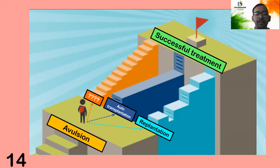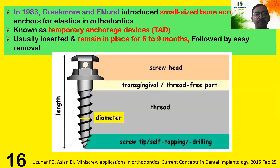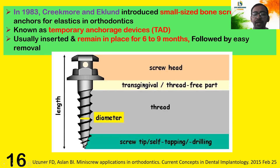In addition to replantation and auto-transplantation, there is one more novel approach: mini implants. The mini implant is screw-like in shape, with a diameter of around 1.2 to 2.3mm and a length of 8 to 13mm, indicated as an intermediate or temporary prosthesis. In 1983, Crickmore and Accluent introduced a small-size bone screw used as an anchor for elastics in orthodontics, known as a temporary anchorage device, usually inserted and remaining in place for 6 to 9 months. The parts of a mini implant include a screw head, transgingival thread, pre-part, thread, and self-tapping screw tip.